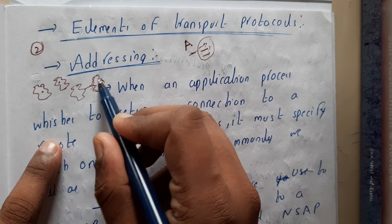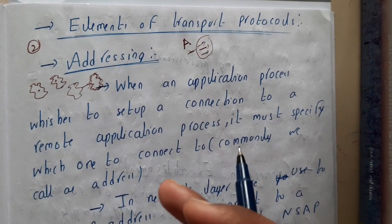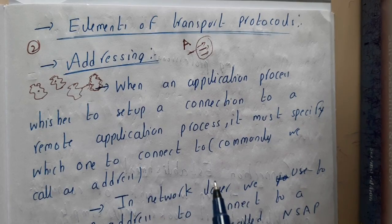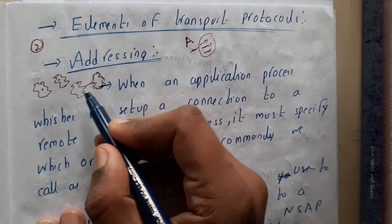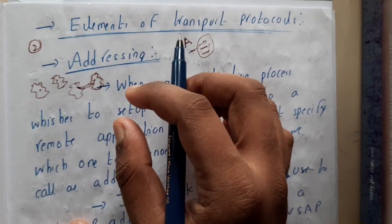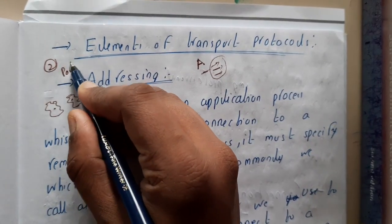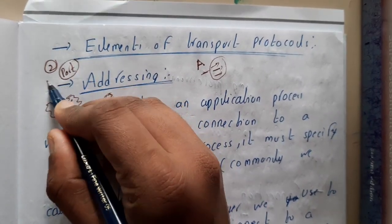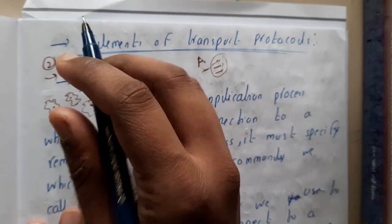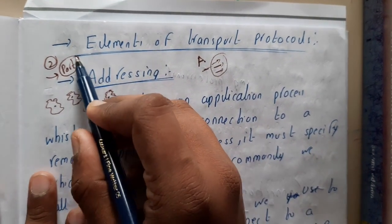In the network layer, we were able to reach till the network, but we don't know which port or which application needs the data. Each and every application which is receiving data from the internet will have a separate port number. For now, you can assume that a port number is just a special number assigned to that application.